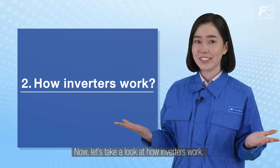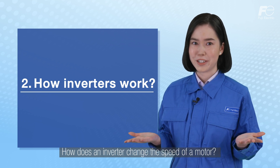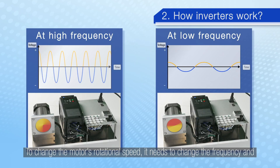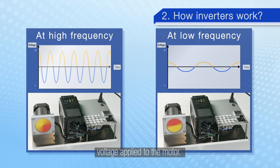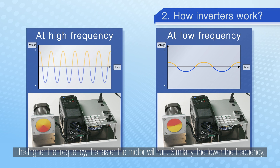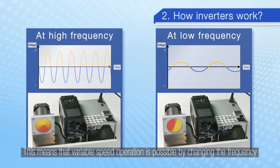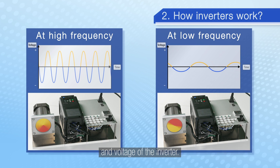Now let's take a look at how inverters work. How does an inverter change the speed of a motor? To change the motor's rotational speed it needs to change the frequency and voltage applied to the motor. The higher the frequency the faster the motor will run, and similarly the lower the frequency the slower the motor will run. This means that variable speed operation is possible by changing the frequency and voltage of the inverter.